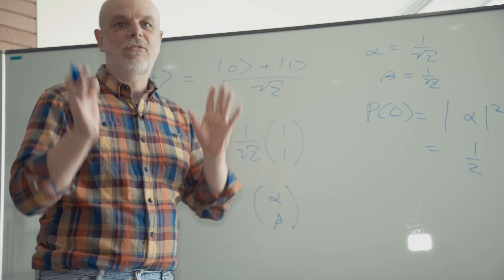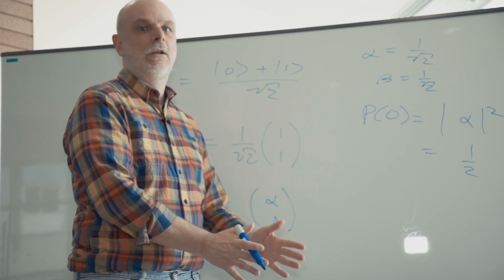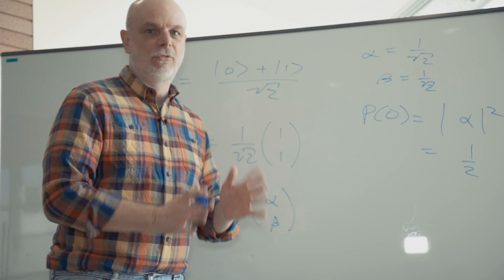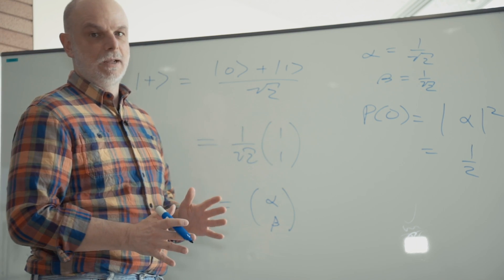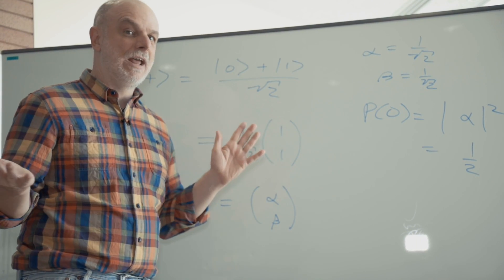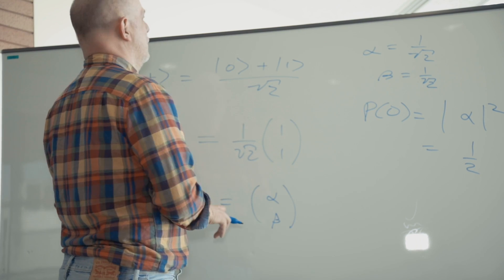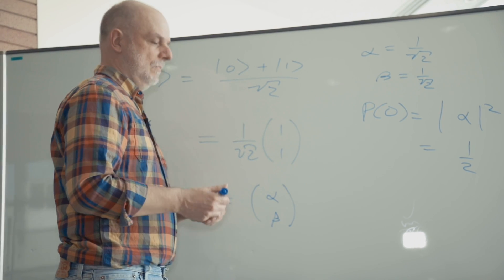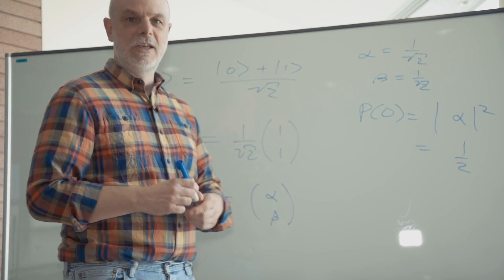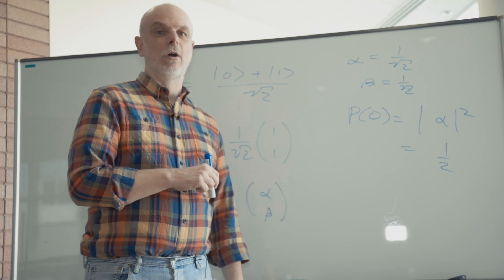In that case, our fidelity is 1. We know exactly what the distribution is going to be. On the other hand, if our fidelity was not 1, then our distribution would be wrong.